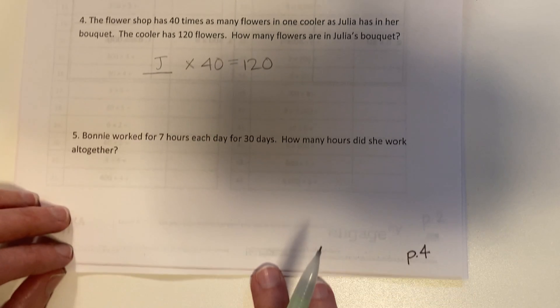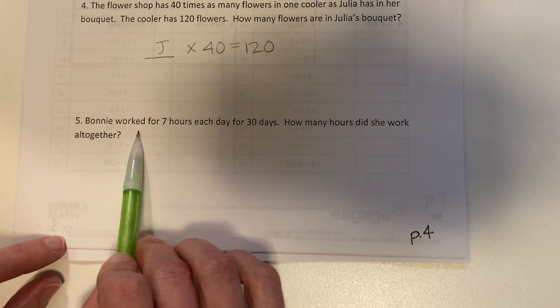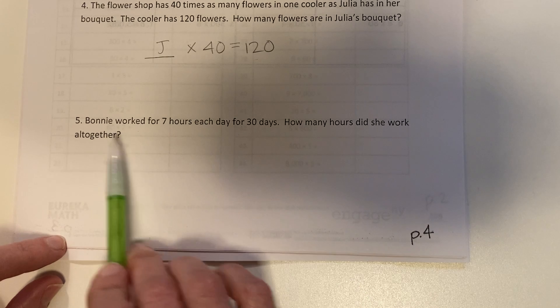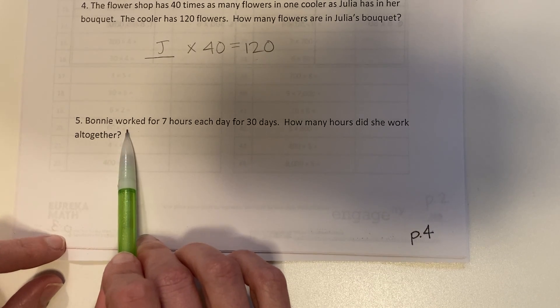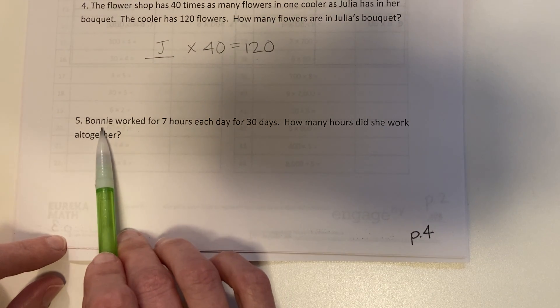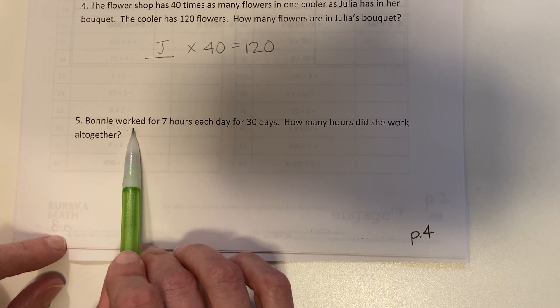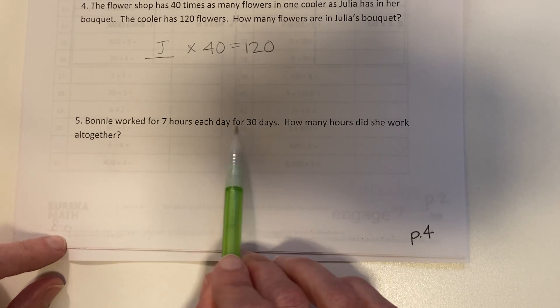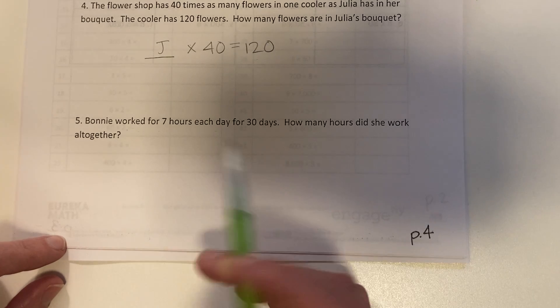And then finally, Bonnie worked... oh, I read the word 'out'. Bonnie worked for 7 hours each day for 30 days. How many hours did she work altogether?